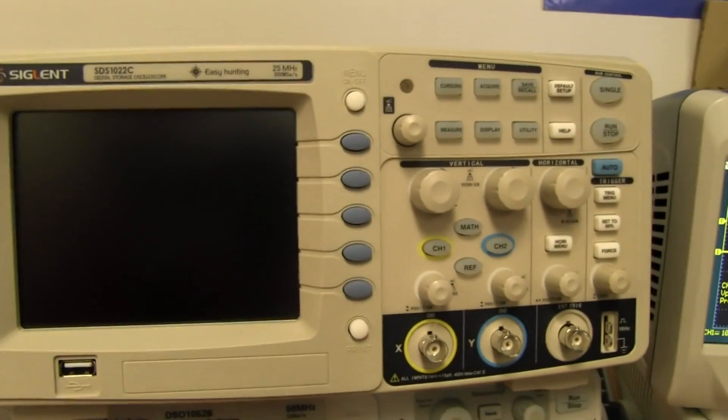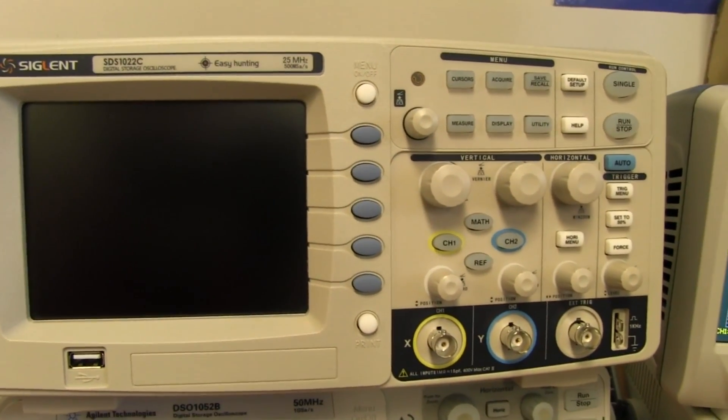It's a fairly nice 4-channel, 200 megahertz scope for under 2 grand Australian. With a 3-year parts and labor warranty. There you go. But anyway, this one is cheaper than a multimeter. It's just crazy.